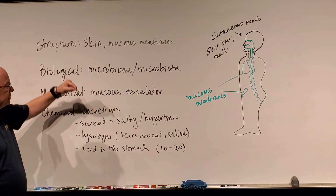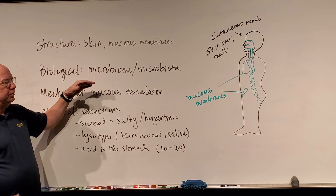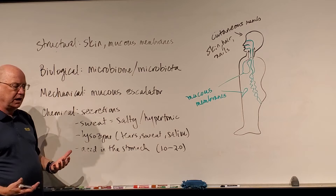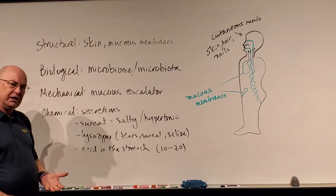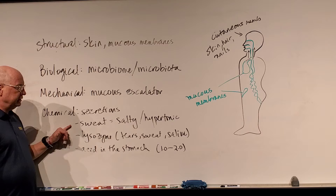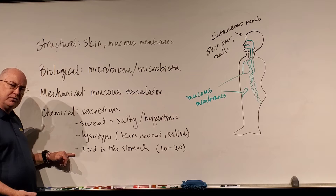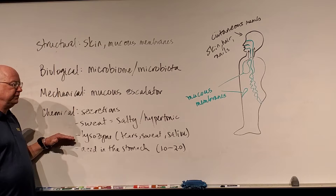So our first line of defense involves: the structural component — the actual skin and mucous membranes — which is very difficult for pathogens to cross because of those junctions, shedding, sloughing, and the cilia moving things along; the biological component — the microbiome or microbiota — which outcompetes other bacteria for nutrients and can make secretions like acids and enzymes to make the environment inhospitable; the mechanical component — the mucous escalator literally moving stuff along — and also peristalsis of the digestive tract; and the chemical components — sweat, acidity, saltiness, hypertonicity, acids in the urethra and vagina, and enzymes like lysozyme.